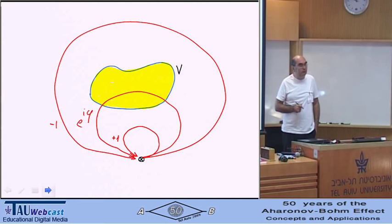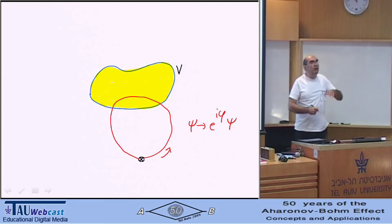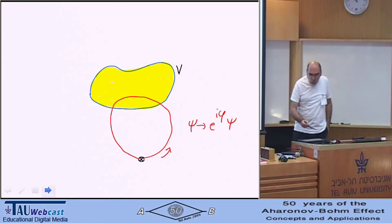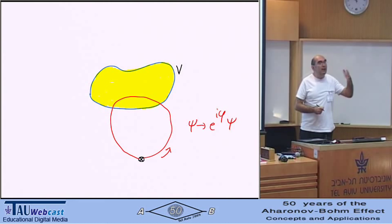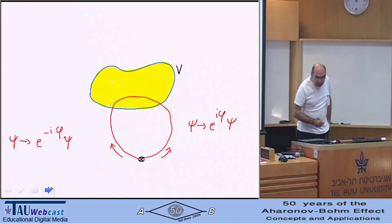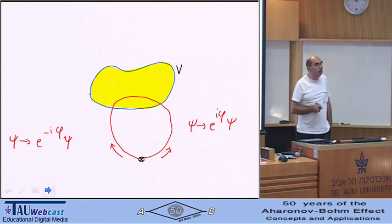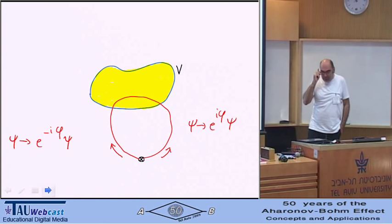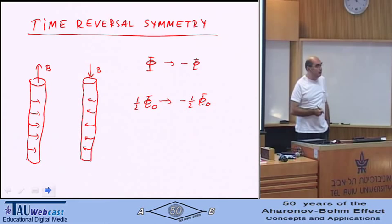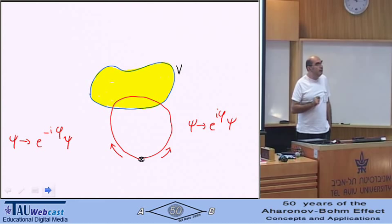Well, so here it is. If you go one way, it acquires a phase e to the i phi. By the way, it also acquires a dynamic phase, but that is trivial. One can account. If it goes the other way, it acquires a phase e to minus i phi. Okay, that's very simple. But this particular problem with half a fluxon has an interesting symmetry. Namely, it is time reversal. Let's see why.